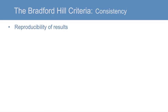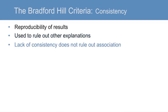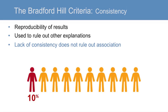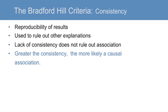The next criterion, consistency, refers to the reproducibility of study results in various populations and situations. Consistency is generally utilized to rule out other explanations for the development of a given outcome. However, the lack of consistency does not rule out a causal association, because some effects are only produced under specific combinations of causal components. These conditions may not have been met in some studies of other populations. For example, only ten percent of heavy smokers develop lung cancer, and the other causal components are still being investigated. In general, the greater the consistency, the more likely a causal association.